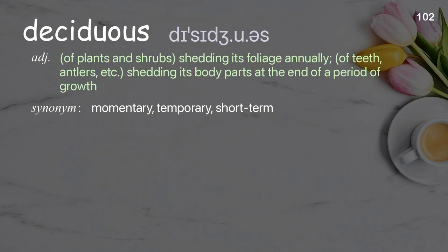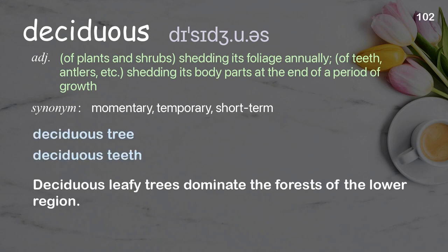Deciduous: Of plants and shrubs, shedding its foliage annually; of teeth, antlers, etc., shedding its body parts at the end of a period of growth. Examples: Deciduous tree. Deciduous teeth. Deciduous leafy trees dominate the forests of the lower region.